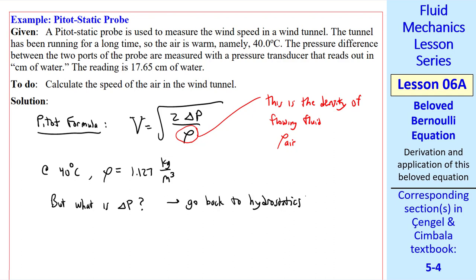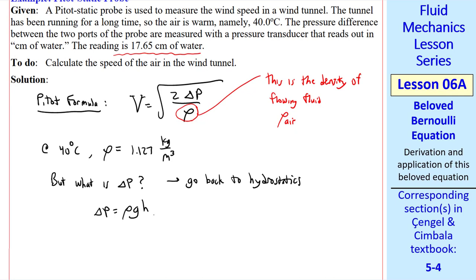We go back to our discussion about hydrostatics. When you have a reading like this, we're talking about an equivalent column height of fluid representing a pressure. So ΔP is ρg times that equivalent water height. But again, you have to be careful. This ρ is ρ of the equivalent column height liquid. In this case, water. So this ρ is ρ water.